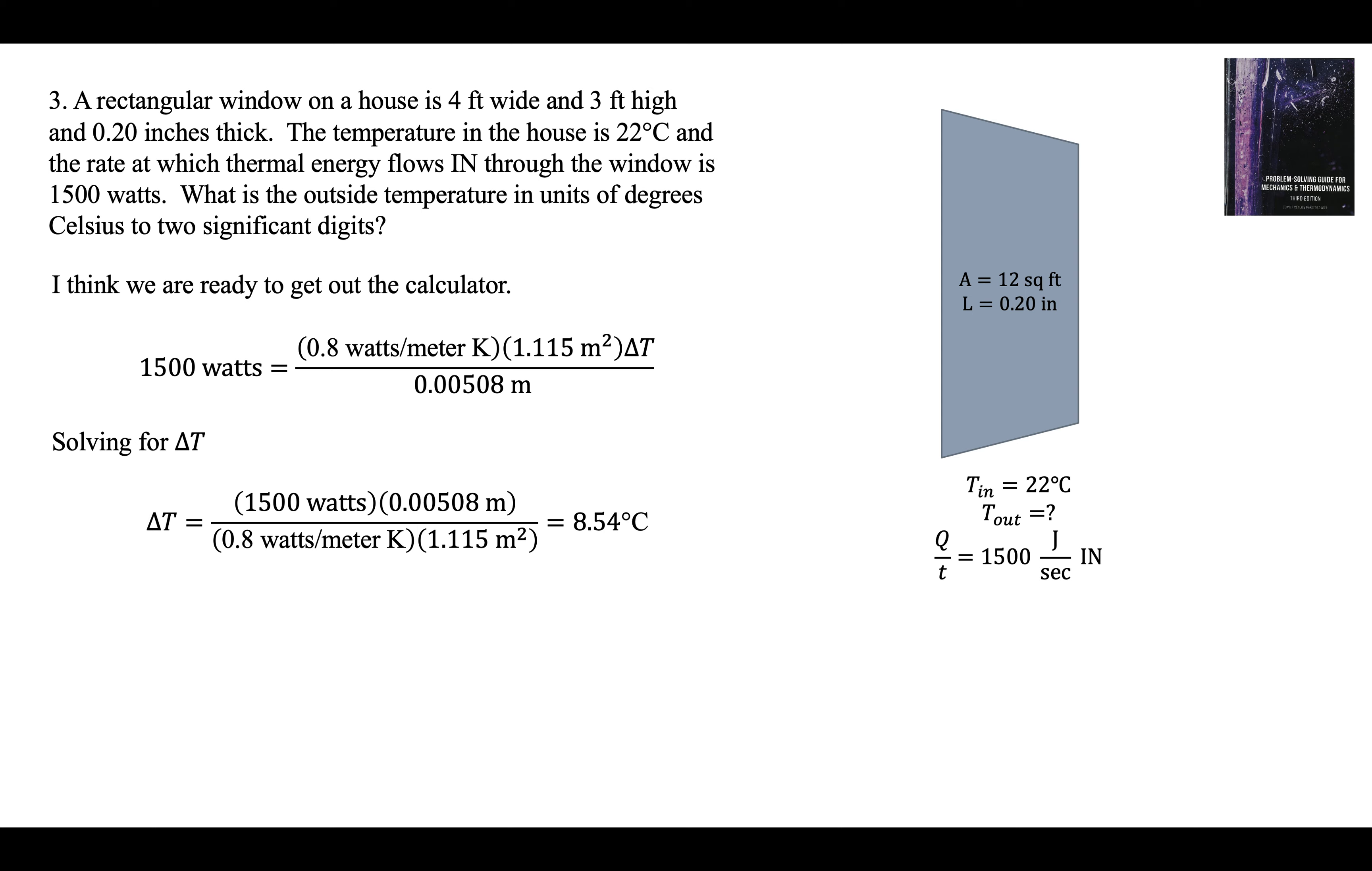Heat is flowing in, so it must be hotter outside. So we have to add 8.54 to 22. And we round up because it asks for two significant digits. So we get 31 degrees outside. Hot day. That's problem three.